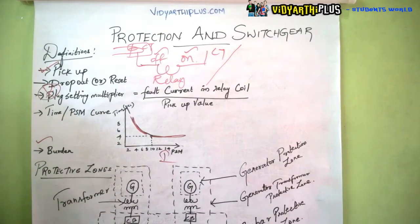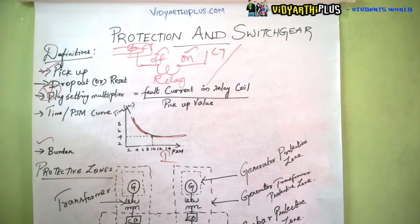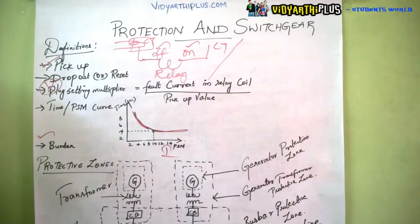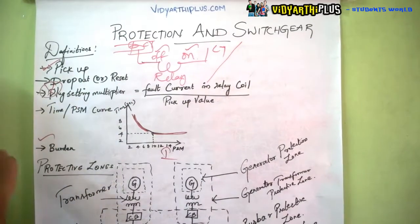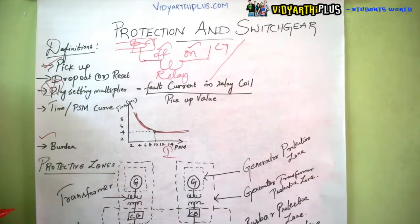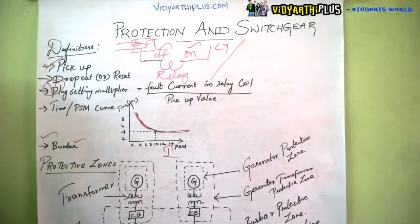The final definition is burden. Burden is the power consumption of the relay — the power consumed by the relay during its operation.